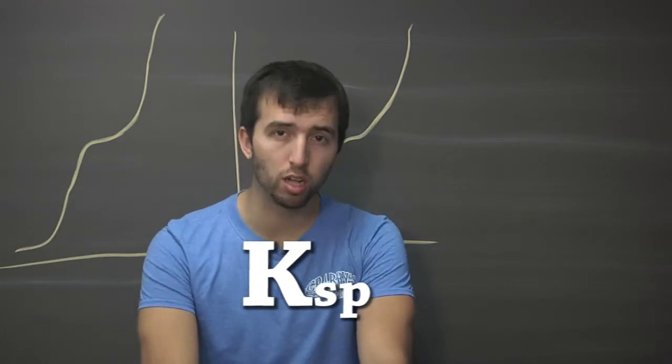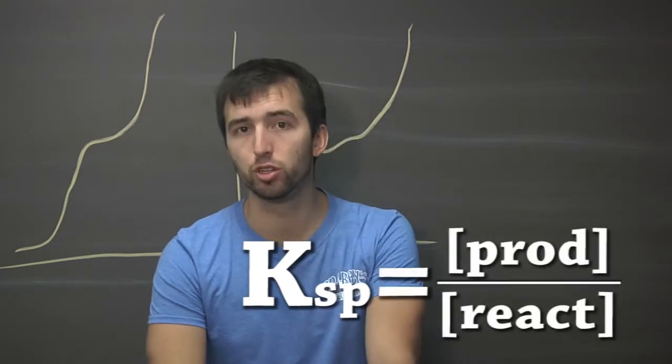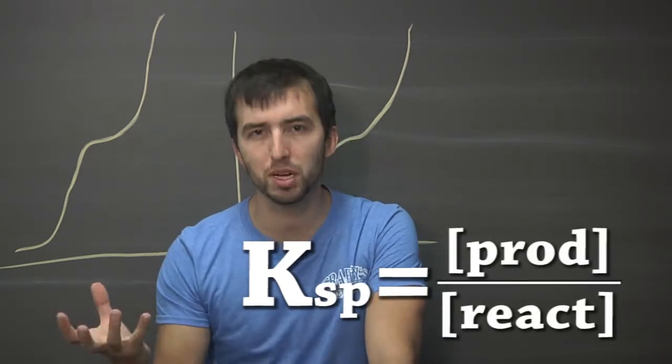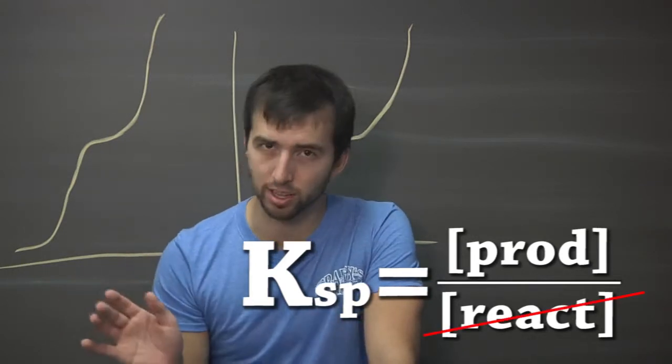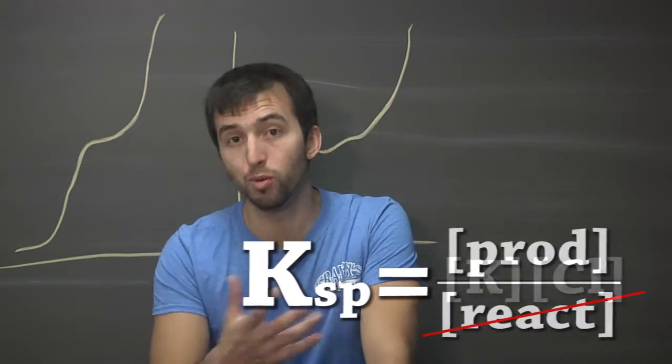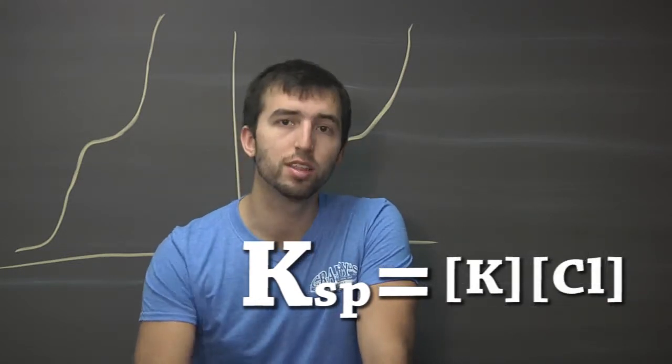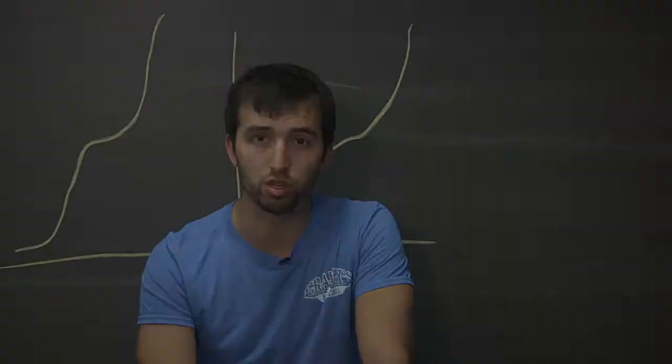This is also called dissociation, since Ksp is normally just equal to products over reactants, but typically our reactants are solids, so they can be cancelled out of the equation. And because it doesn't include solids or reactants, usually the higher the Ksp value, the more of this compound will dissolve in your solution.